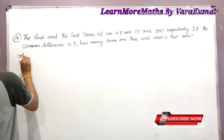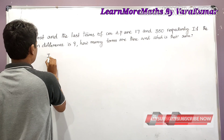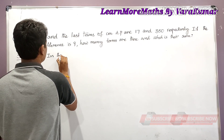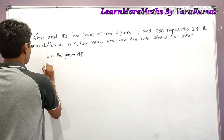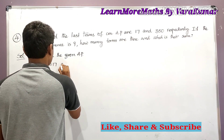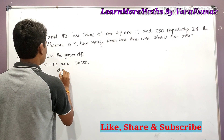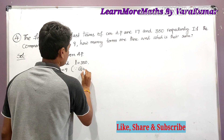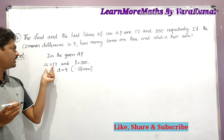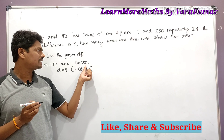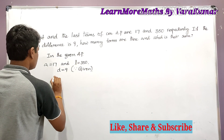Now for the solution. In the given AP, the first term a = 17, the last term l = 350, and the common difference d = 9. Taking l = 350, since the last term is the nth term in an AP, we can write it as a + (n−1)×d = 350.